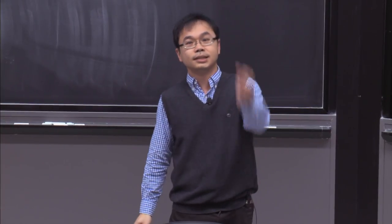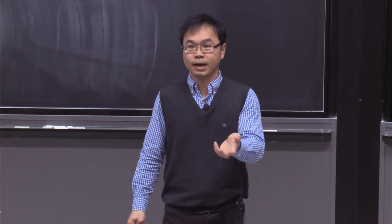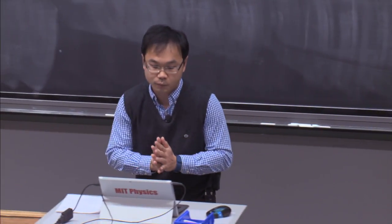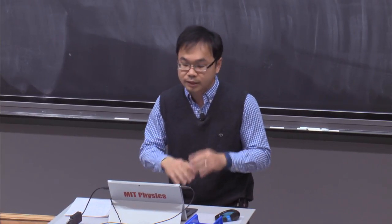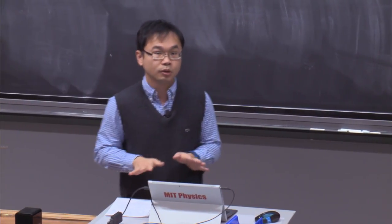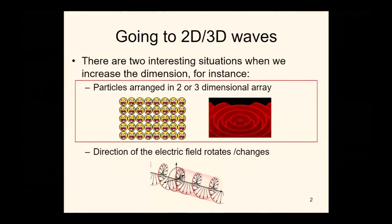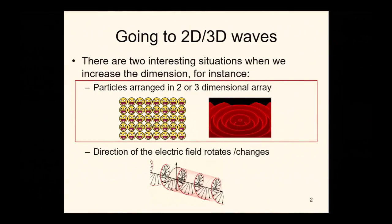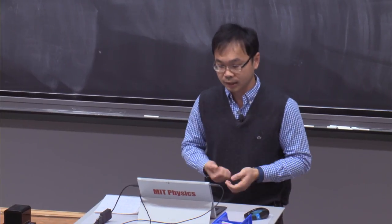All those objects are oscillating in just one direction, for example up and down. That's one method we can increase the dimension. There's another interesting example we will talk about today: changing the direction of the oscillation, or even rotating the electromagnetic waves. How can we achieve that, and how do we understand this kind of phenomenon? That's going to be covered in today's lecture.